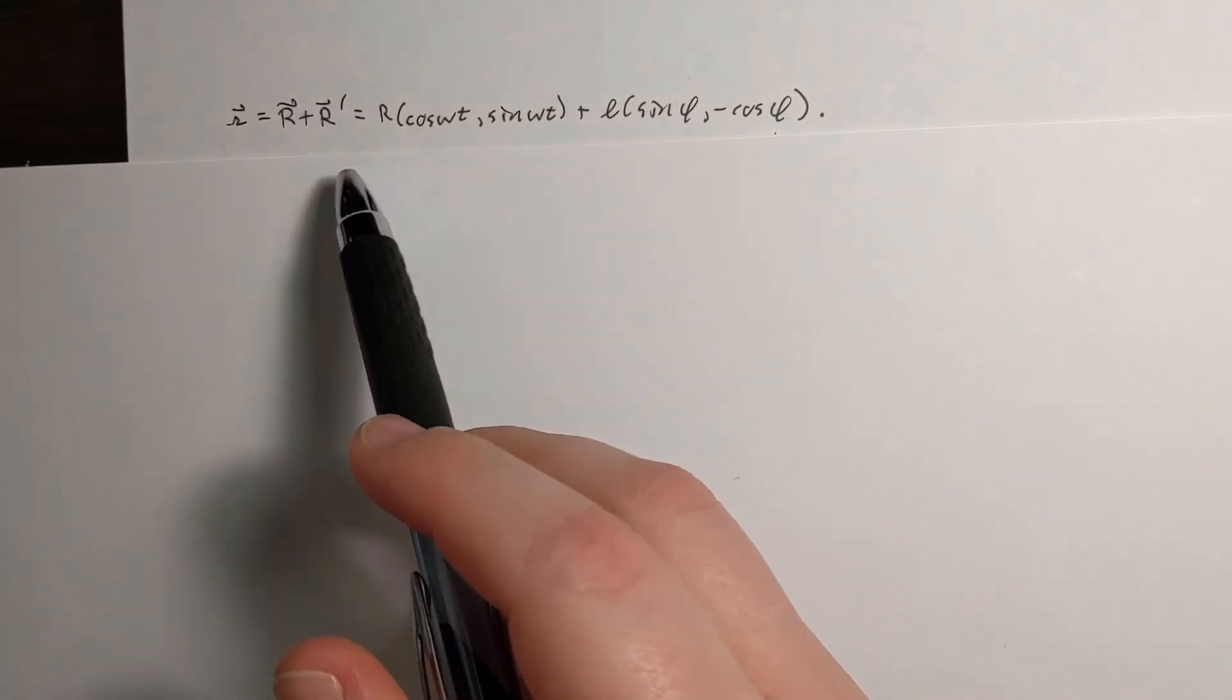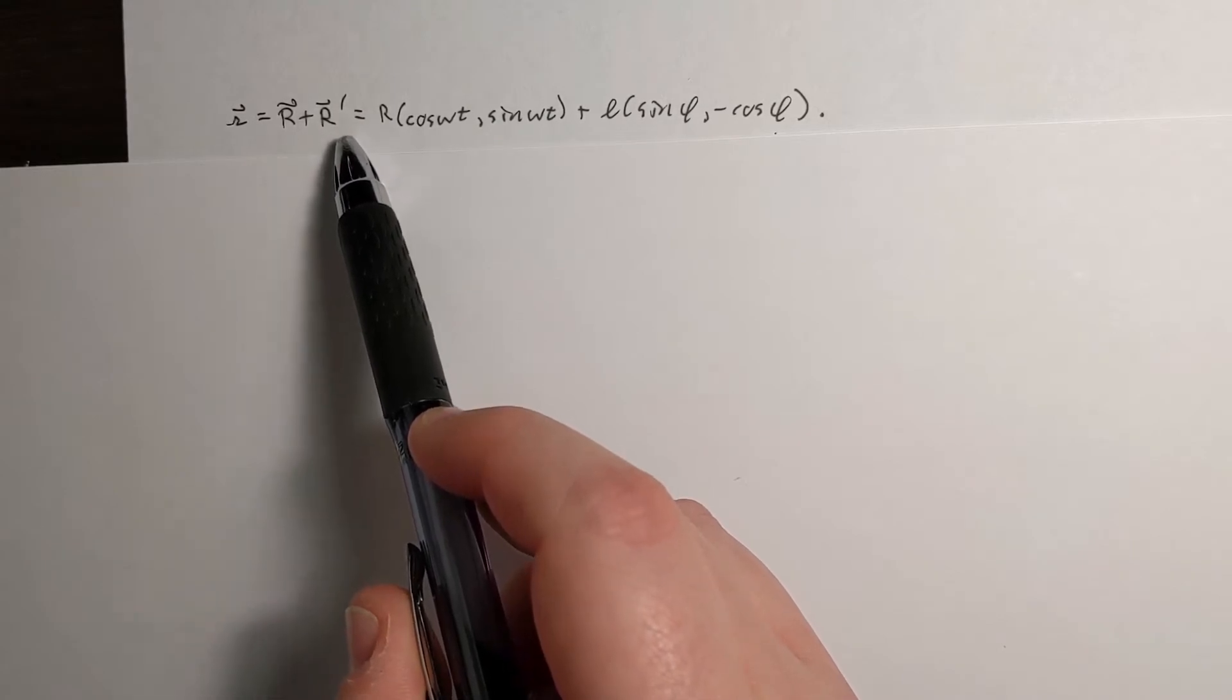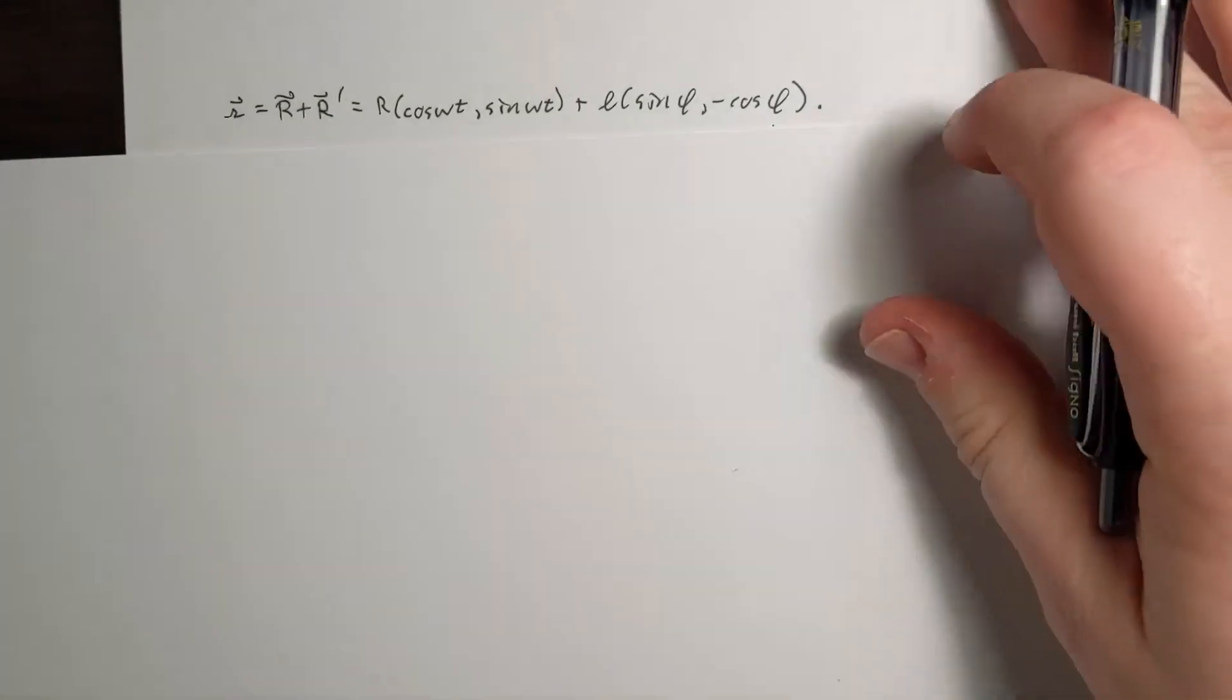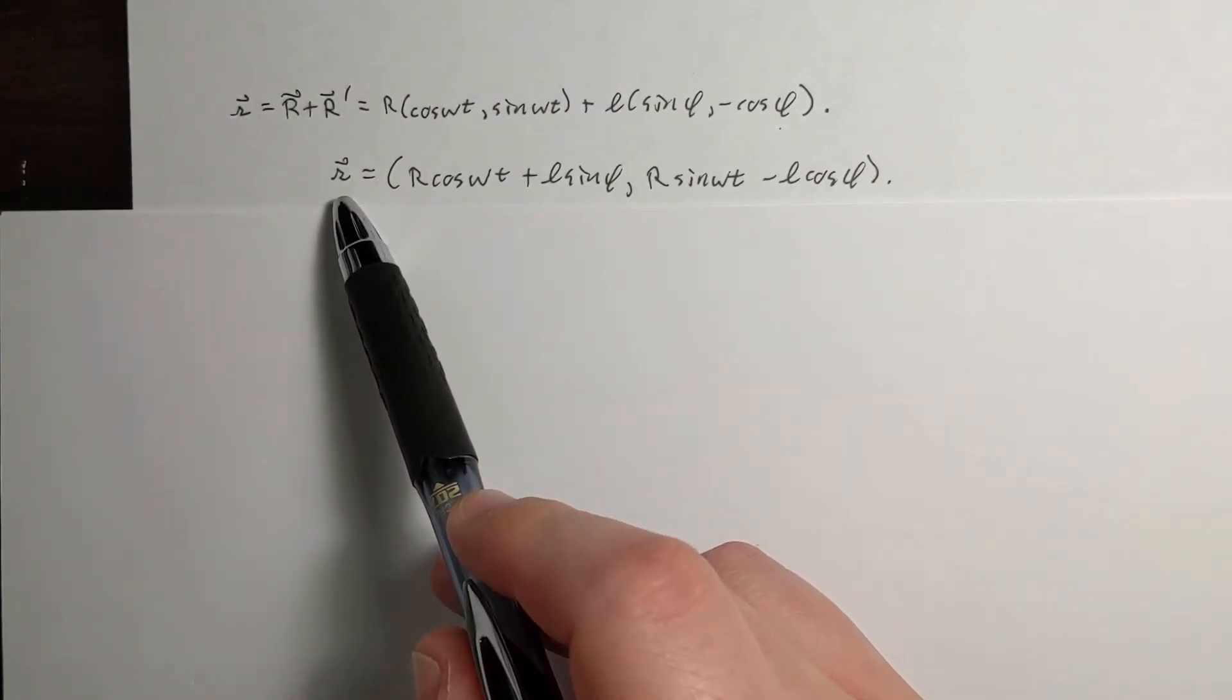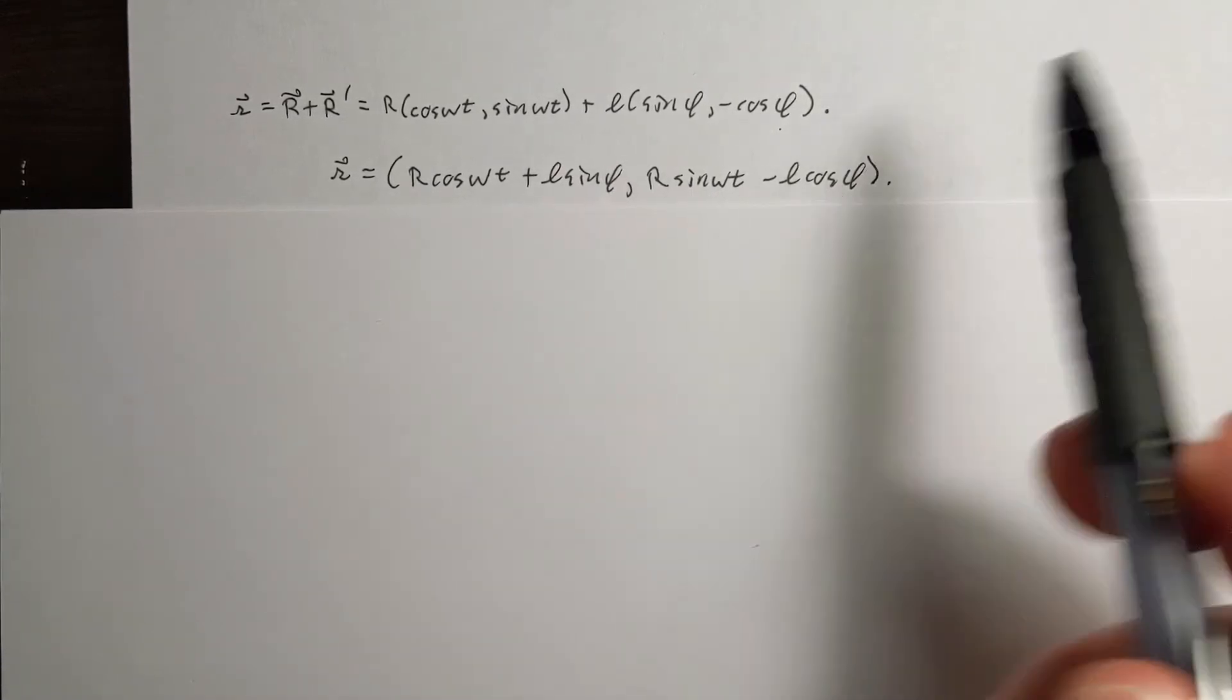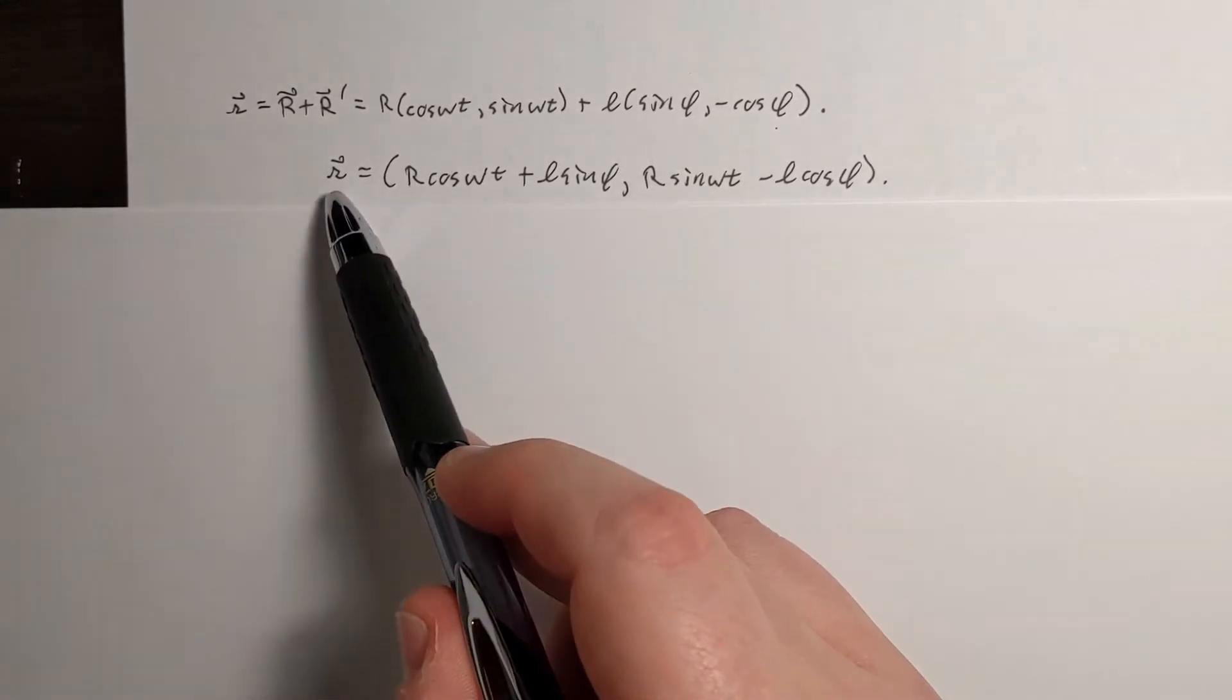So copying down what I wrote, curly R is the resultant of R plus R prime, and I've simply rewritten. So we're going to combine into one vector instead of two separate vectors. So my position vector with respect to my origin, simply added component-wise, but I want kinetic energy, which means I need the speed. So the speed is just the time derivative of R.